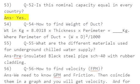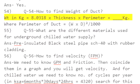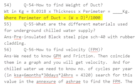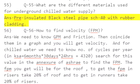Q54: How to find the weight of ducts? Weight in kilograms equals 8.0318 multiplied by thickness divided by 6, multiplied by perimeter — where perimeter of duct equals (W + D) multiplied by 2, divided by 1000. Q55: What are the different materials used for underground chilled water supply? Answer: Pre-insulated black steel pipe schedule 40 with rubber cladding.